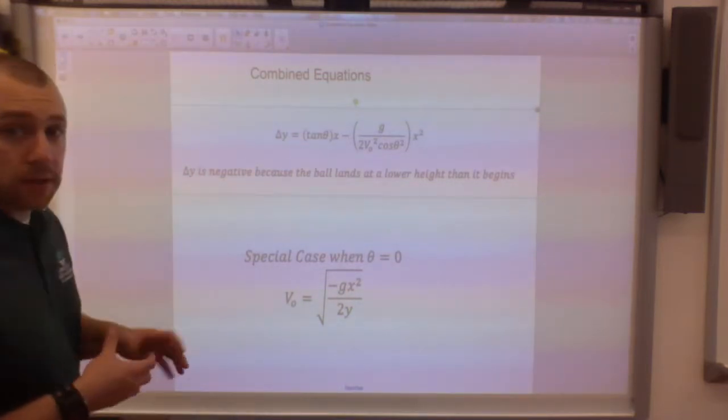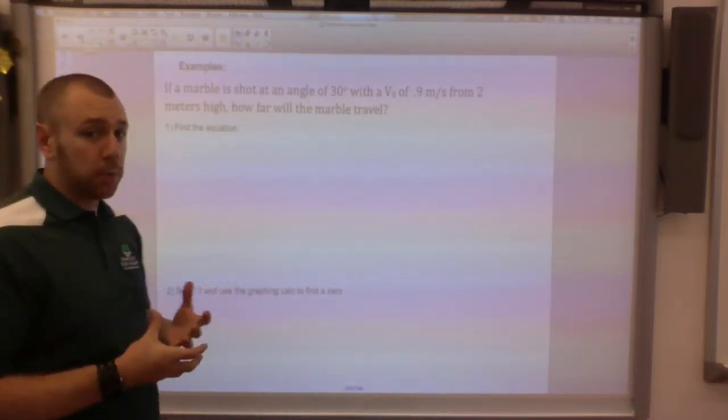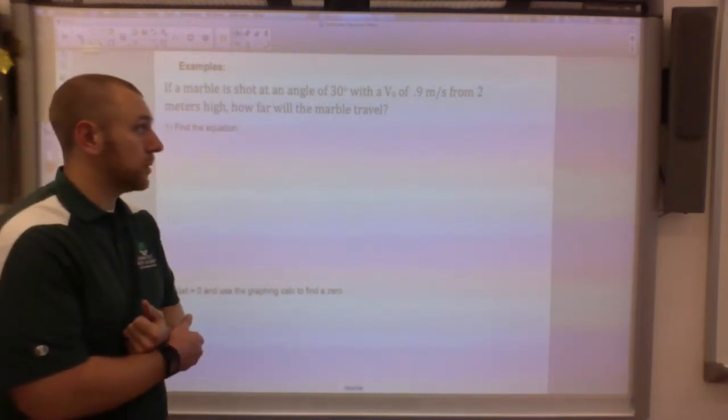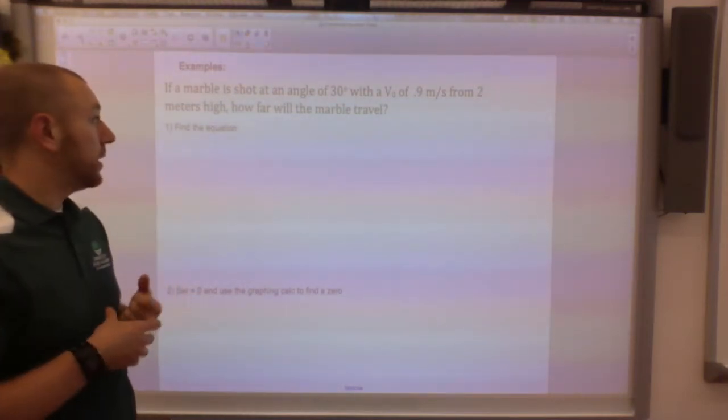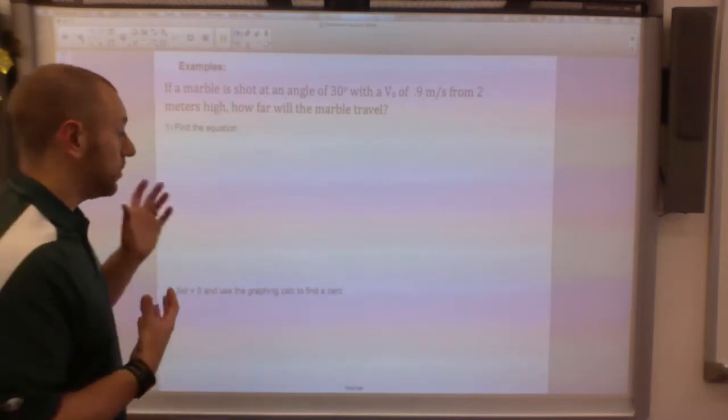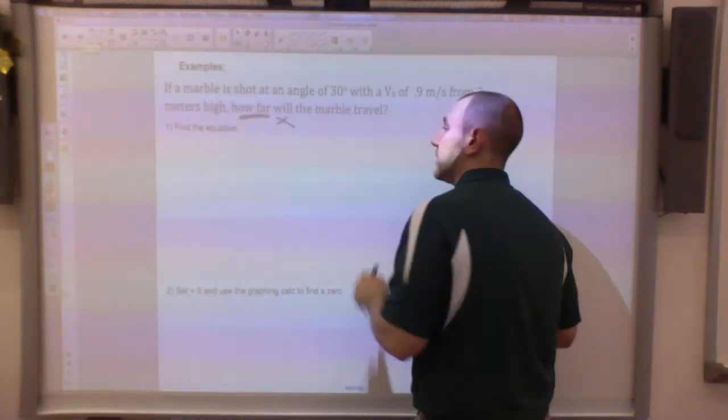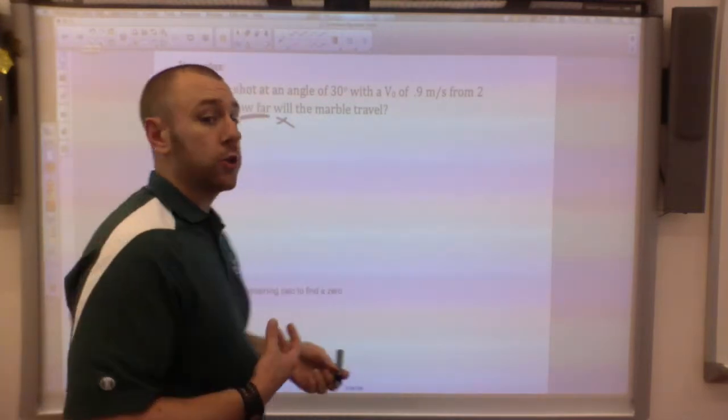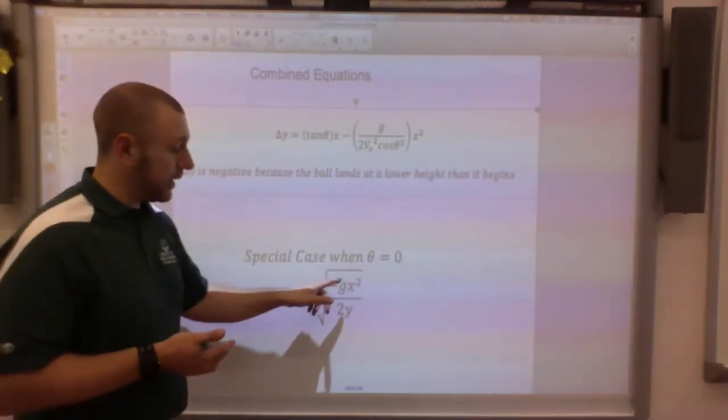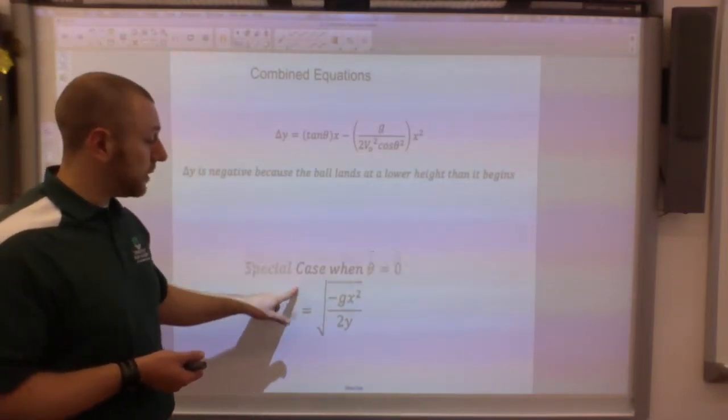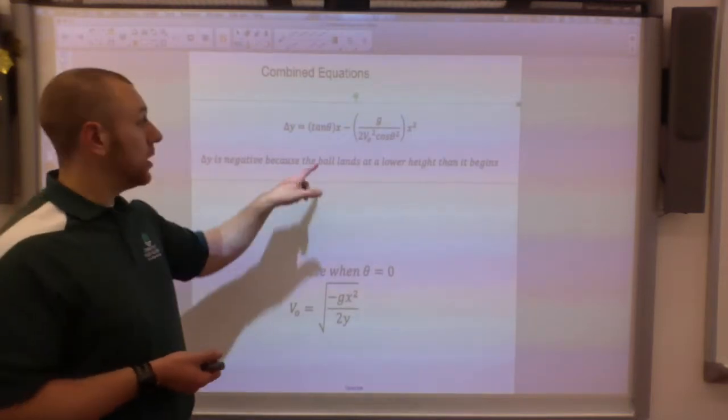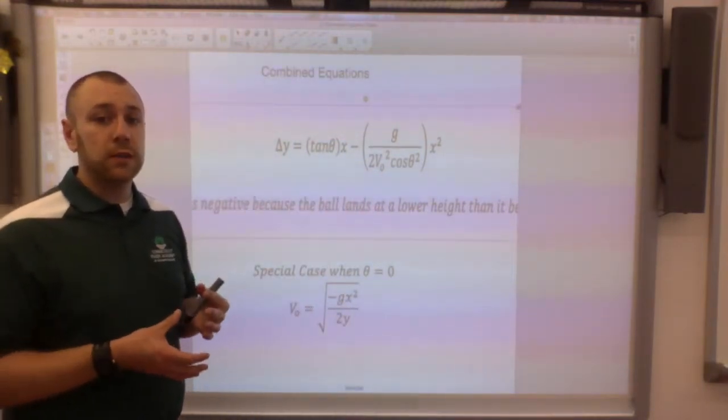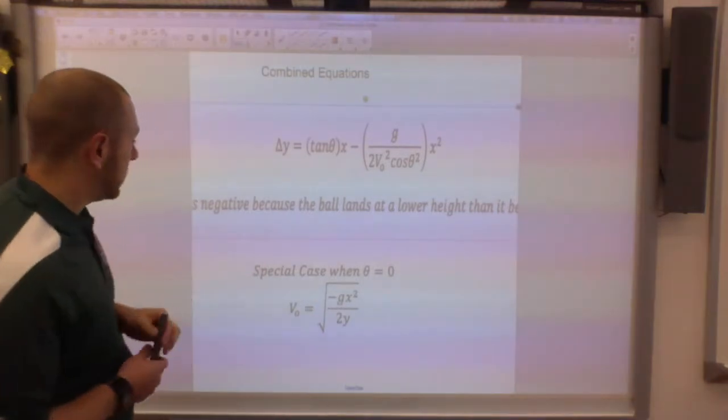The example we're going to give here is: a marble is shot at a 30 degree angle with our initial velocity as 0.9 meters per second from a two meter high shelf. How far will the marble travel? We're going to start by plugging in the numbers into our equation. Our angle is not zero and we're not looking for the initial velocity.